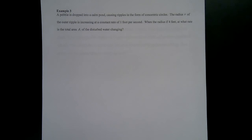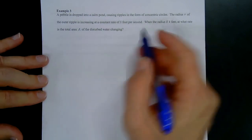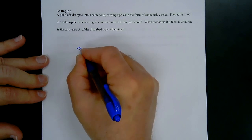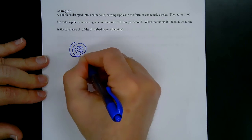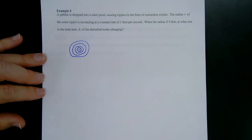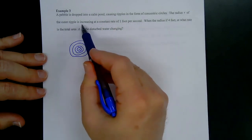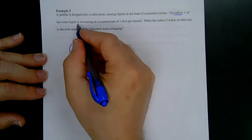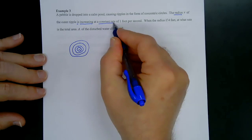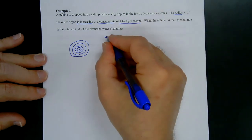For the next example: a pebble is dropped into a calm pond, causing ripples in the form of concentric circles. The radius r of the outer ripple is increasing at a rate of one foot per second. The radius is getting bigger at a constant rate, and because this is a rate, it is a derivative.